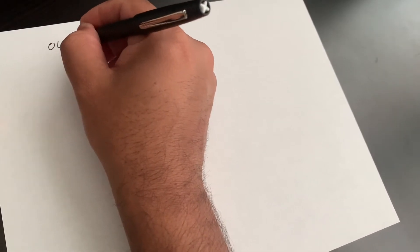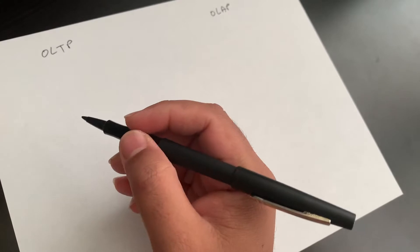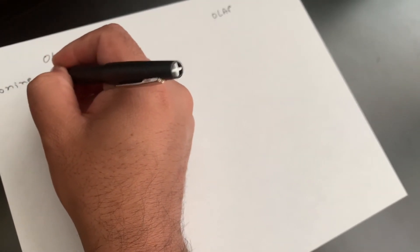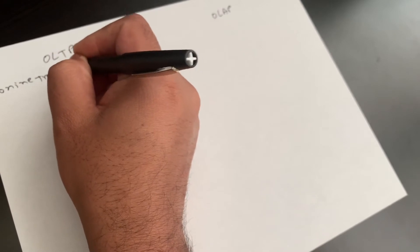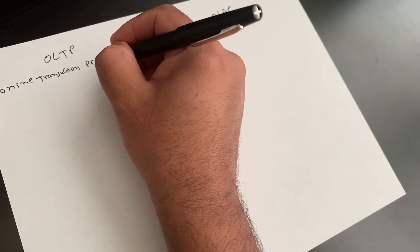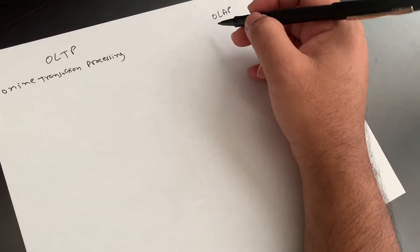Hello friends, today we are going to see OLTP versus OLAP. Full form for OLTP is Online Transaction Processing and for OLAP, Online Analytical Processing.